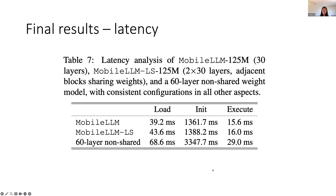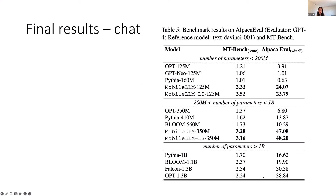We fine-tuned the pre-trained mobile LLM models on a chat dataset and evaluated on Alpaca Eval and MT-Bench benchmarks. Mobile LLM models significantly outperform previous SOTA sub-billion-scale models, even surpassing models with 1 billion parameters. Notably, the mobile LLM 350M layer-sharing model achieves an impressive win rate of 48% compared to the baseline GPT-3 model. Considering that GPT-3's self-win rate is 50%, it is remarkable that mobile LLM with only 350M parameters achieves comparable chat performance.